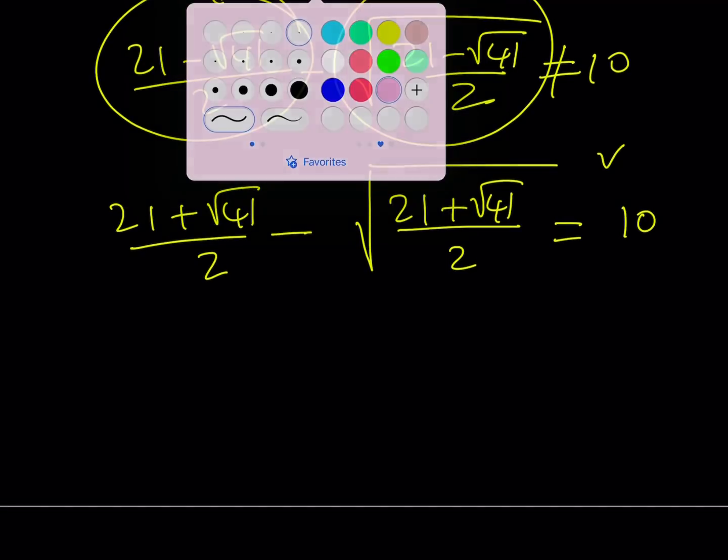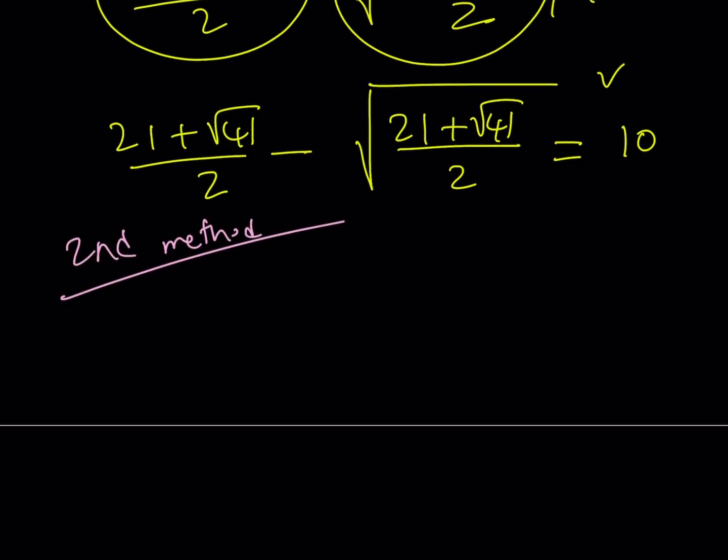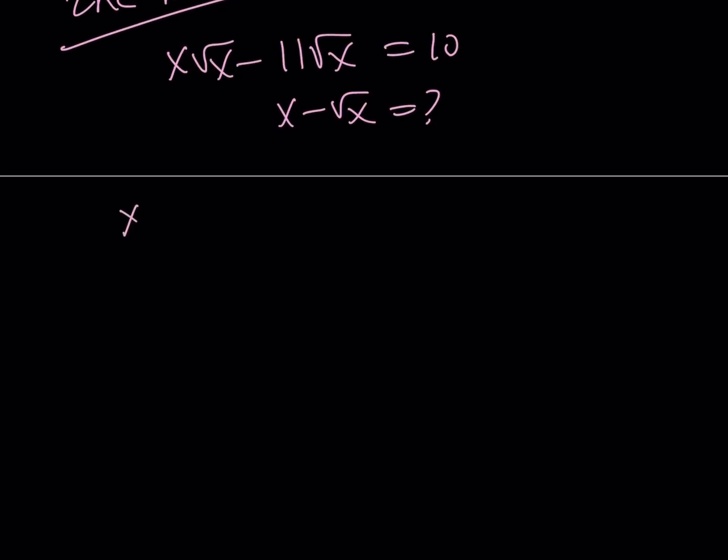Second method. The second method is really cool. I think you're going to love it. So I have x root x minus 11 root x, and that is equal to 10. And I'm supposed to evaluate x minus root x. Here's how I'm going to do it. I'm going to split up the 11 into x root x minus 10 root x. Why do I split it up? Because it's fun, and you'll see in a little bit.